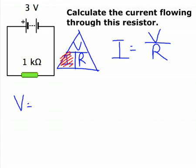Now the circuit diagram gives us some values for V and R. We're told that V is 3 volts, and R is 1 kilohm.